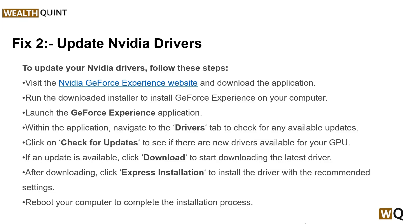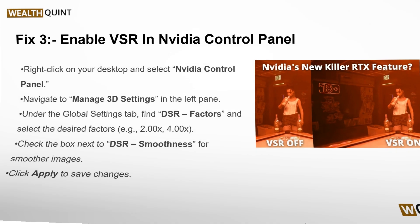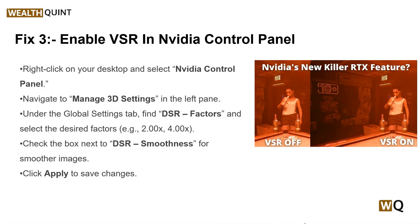Our next solution is to enable VSR in the NVIDIA Control Panel. Enabling Video Super Resolution in the NVIDIA Control Panel is essential because VSR is a feature that enhances the quality of video played on your computer. Right-click on your desktop and select NVIDIA Control Panel, then navigate to Manage 3D Settings. Under the Global Settings tab, find DSR Factors, select the desired DSR factor, and check the box next to DSR Smoothness to force smoother images. Click Apply to save changes.